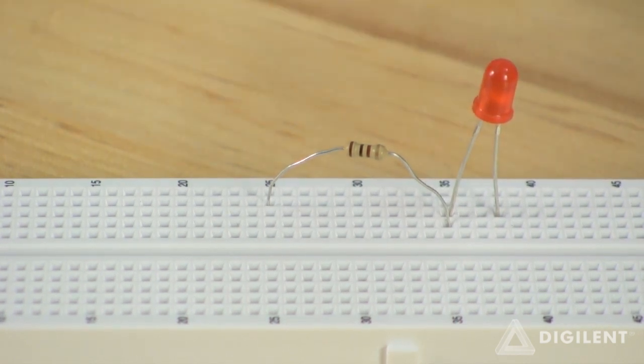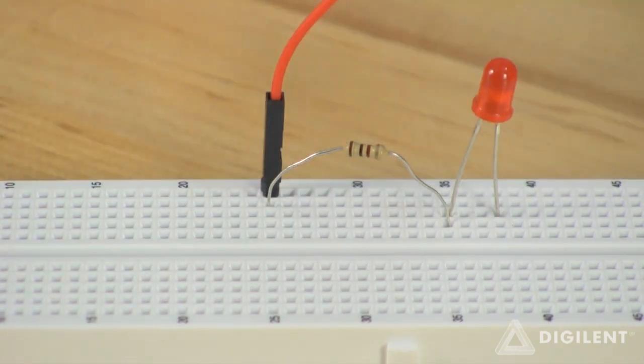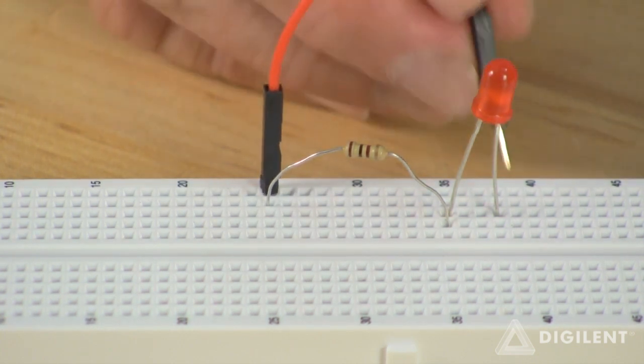Now if we're using V plus to apply our positive voltage, we plug the Analog Discovery's red wire into a hole in the same row as the other terminal of the resistor, and a black wire into a hole in the same row as the diode's cathode.